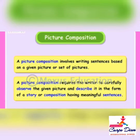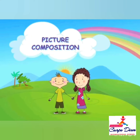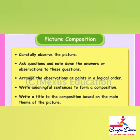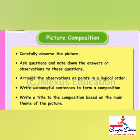Now children, when we want to write a picture composition, we have to keep a few points in our mind. First, carefully observe the picture. Second, ask questions and note down the answers or observations to these questions.